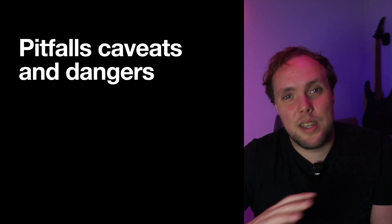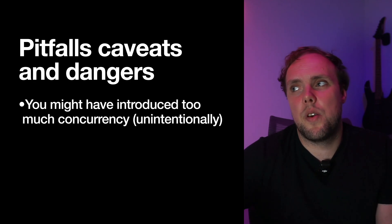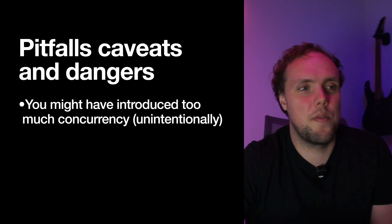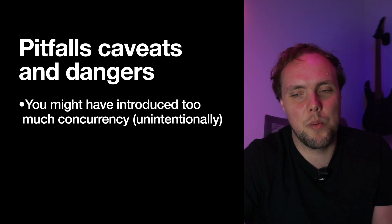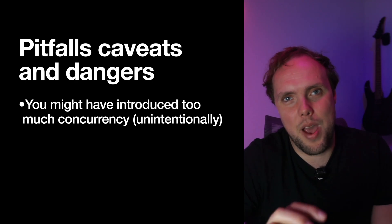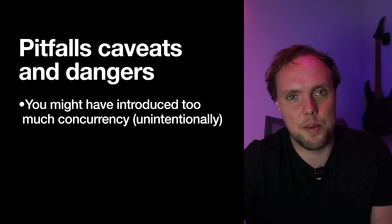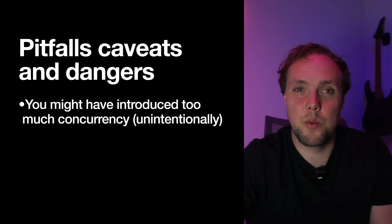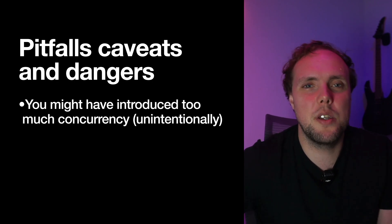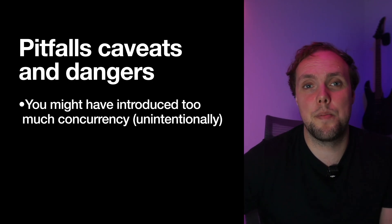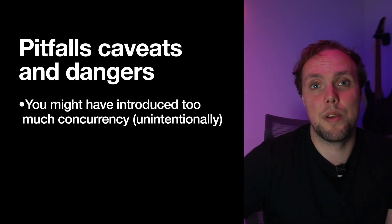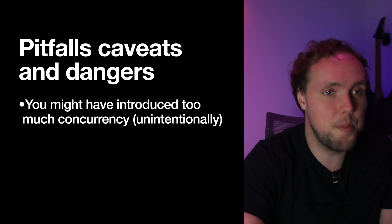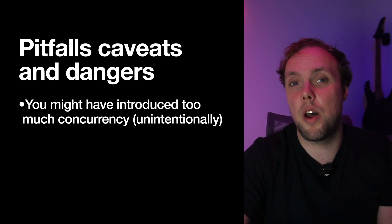There are pitfalls, caveats, and dangers in moving towards Swift 6. One is that you might have already introduced too much concurrency unintentionally. If you started adopting async functions without annotating them with @MainActor and then turn on strict concurrency, you'll have a ton of warnings about things existing in multiple isolation contexts. Make sure you understand whether that was intentional. If it wasn't, probably just apply @MainActor so that it all runs on main where it used to run before — because if it was on the main actor before you moved to Swift concurrency, there's no reason to pull it off main now.